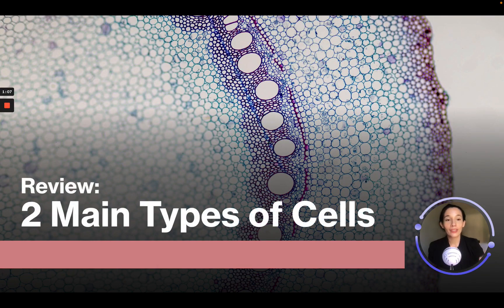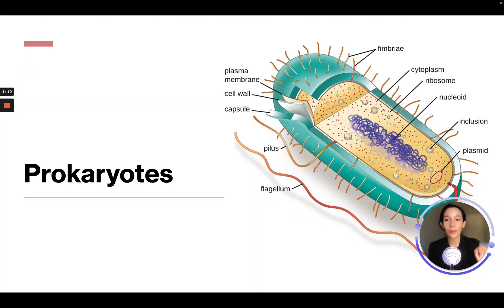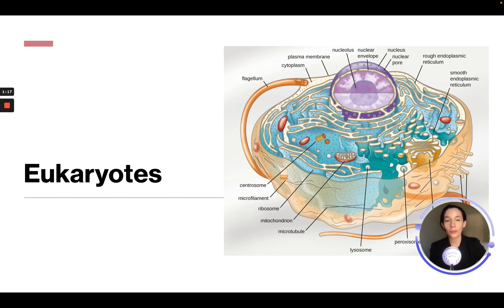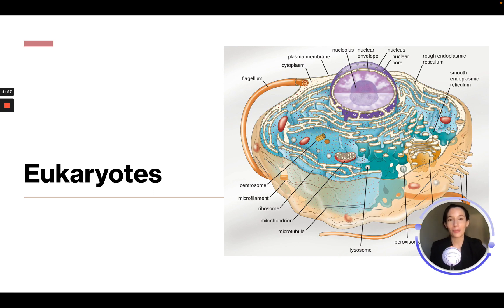The two main types of cells are prokaryotes — our simple little prokaryote cell — and eukaryotes, which look like something from outer space. Eukaryotes are super complex, and all of the different structures within the eukaryote cell have a specific function.